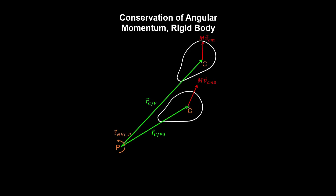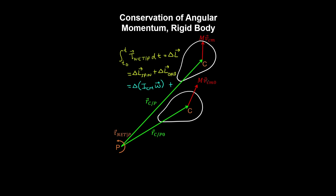We have a general case where a rigid body is free to translate and rotate, and we take the torque about a point other than the centre of mass. The angular impulse is equal to the change in angular momentum, and because the body can translate and rotate, we can split this into the spin angular momentum plus the orbital angular momentum. The rigid body spins or rotates about its centre of mass — this is the spin angular momentum term — and due to the linear momentum of the centre of mass, the rigid body also orbits around P. The orbital angular momentum is the cross product between a radial vector from the centre of mass to P and the linear momentum vector.